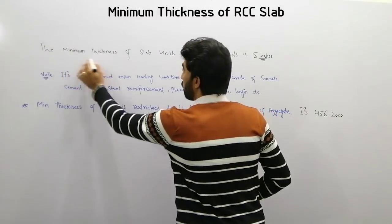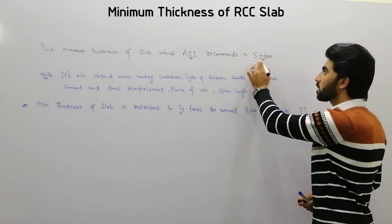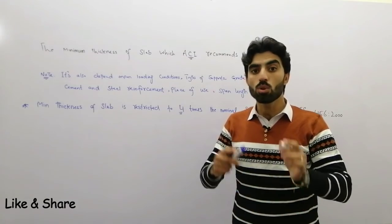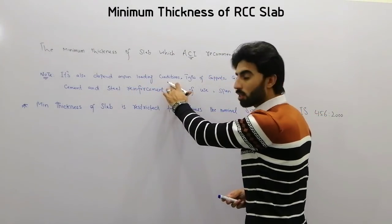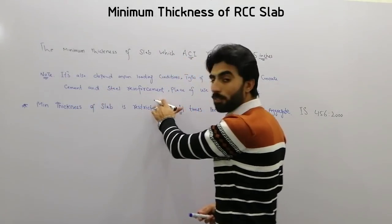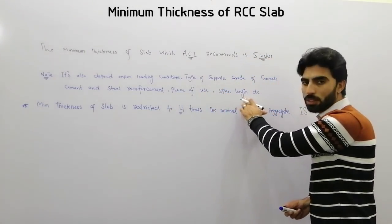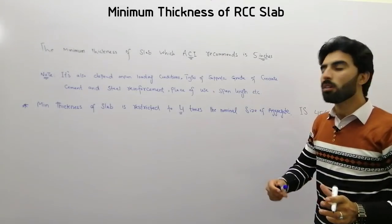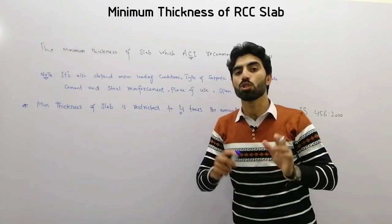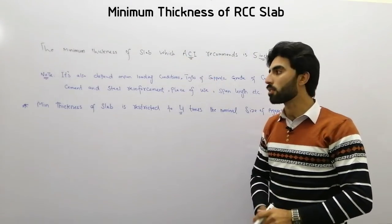Remember, the minimum thickness of RCC slab which ACI — American Concrete Institute — recommends is 5 inches. Minimum thickness of RCC slab should not be less than 5 inches. It also depends on loading conditions, types of supports, grade of concrete, grade of cement, steel reinforcement grades, place of use, and span length. From these points we can find the minimum thickness of RCC slab, but it should not be less than 5 inches as recommended by ACI.